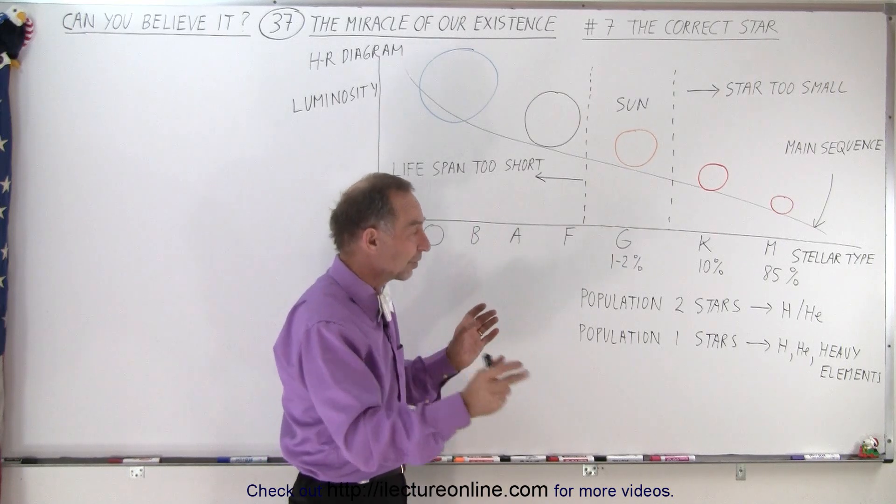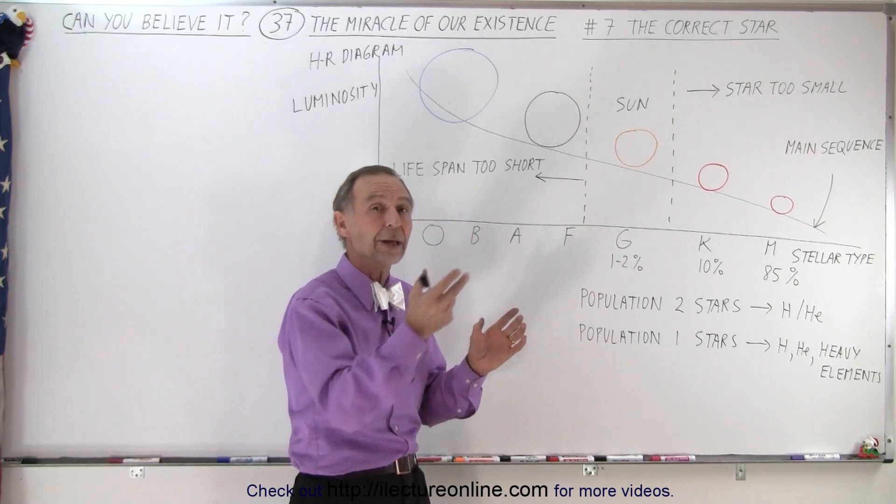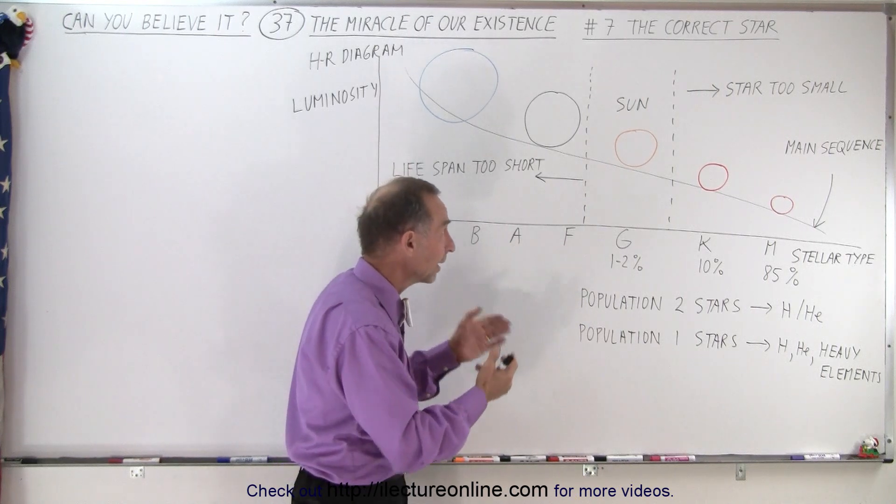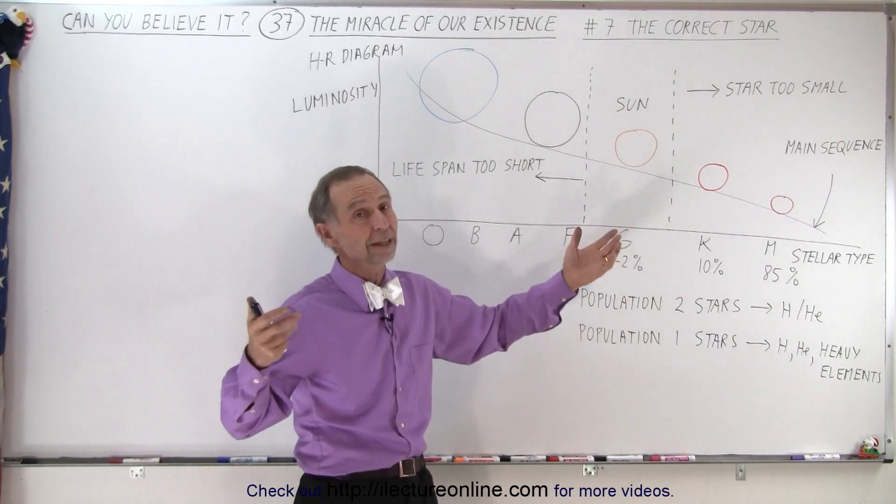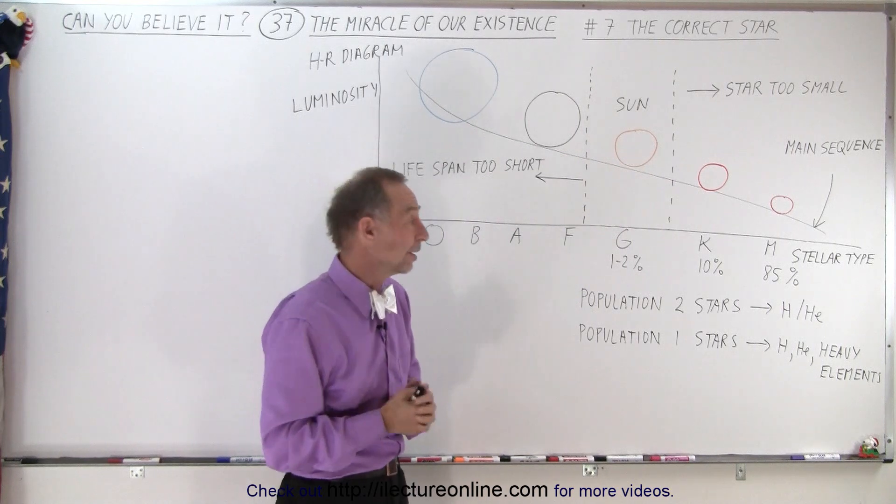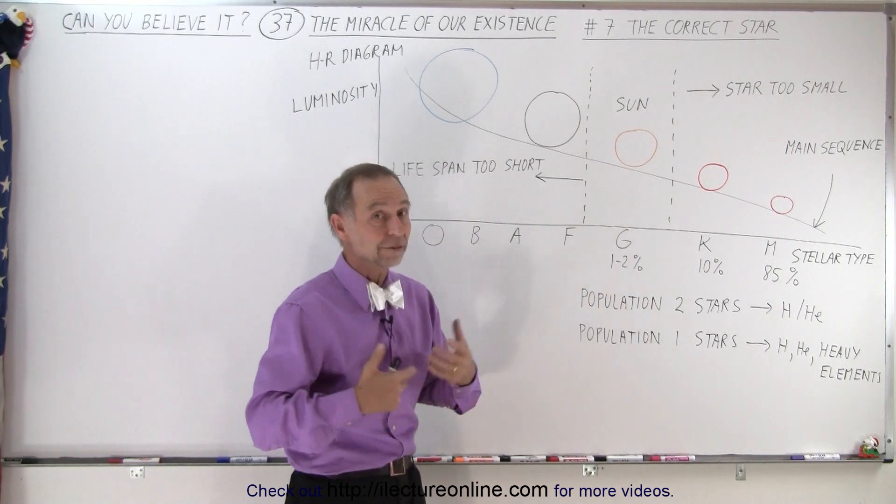The only difference is, of course, that the elliptical orbit causes us to be sometimes somewhat closer, sometimes somewhat farther away. But other than that, the Sun is the perfect type of star, and you can see that they're not very common.